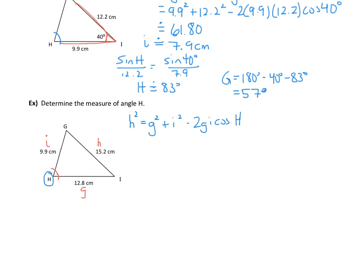Substituting in what we know: 15.2 squared equals 12.8 squared plus 9.9 squared minus 2 times 12.8 times 9.9 times the cosine of angle H.